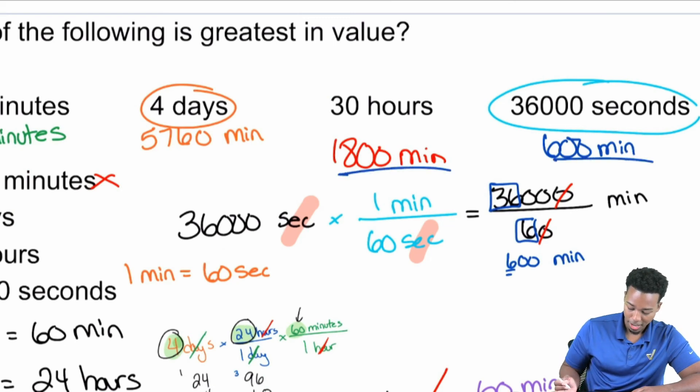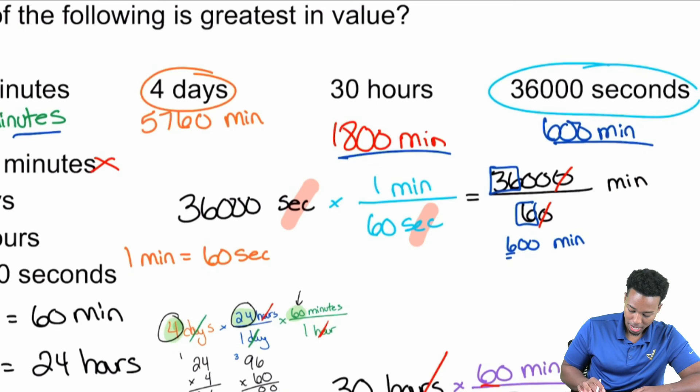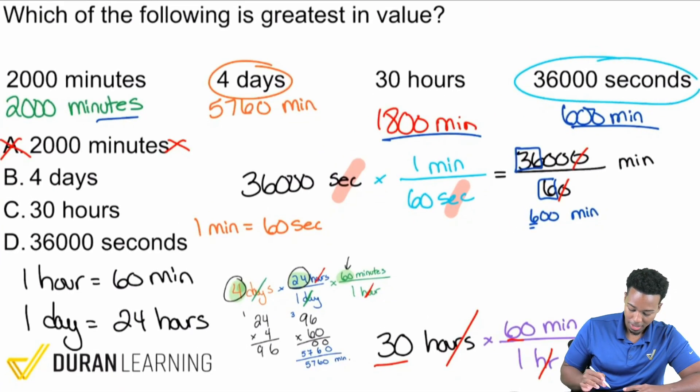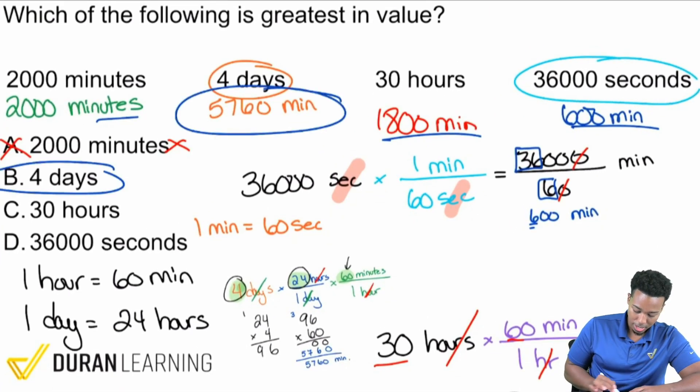And given that it's not even bigger than 30 hours, and it's not even bigger than 2,000, and four days is 5,760 minutes, the answer is B all day long.